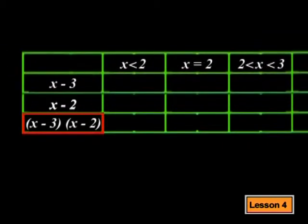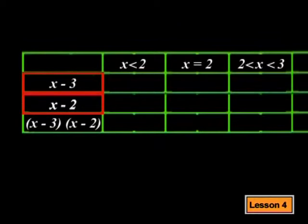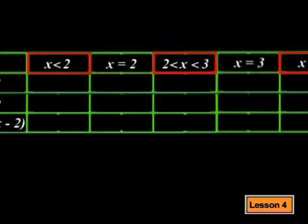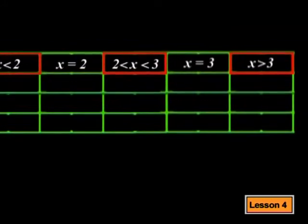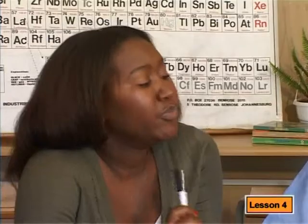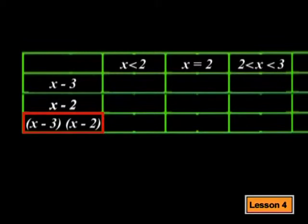We need to work out the solution for x minus 3 times x minus 2, so we will put this into our table. I am also going to put in each of the factors so that we can consider them separately before we consider them together. We have already worked out that when x equals 2 or when x equals 3, the function is equal to 0, which satisfies the inequality. I'll fill the table with sets of possible solutions on either side: values less than 2, values between 2 and 3, and values greater than 3. We aren't really interested in each specific value — we are more interested in whether the brackets give us positive, negative, or zero answers.